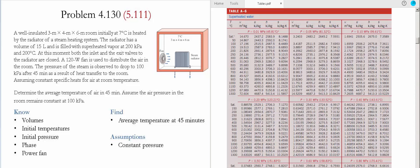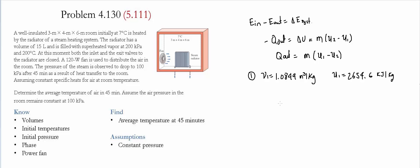State 1 is given to be a superheated vapor, so we go to Table A6. At a pressure of 200 kilopascals (0.2 megapascals) and a temperature of 200°C, we find the specific volume is 1.08049 m³/kg and the specific internal energy is 2654.6 kJ/kg.